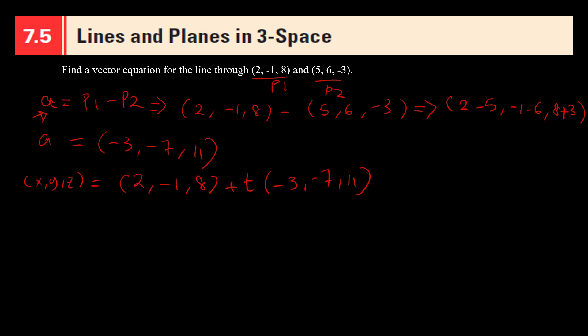If I used P2 minus P1, let's do this: (5, 6, -3) minus (2, -1, 8). So here, which is 5 minus 2, 6, it's already a minus so 6 plus 1, and then -3 minus 8. And here I have 3, 7, -11. So this is my vector A as well.